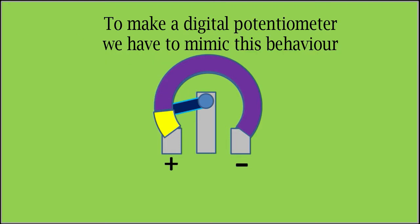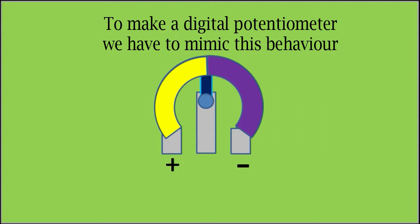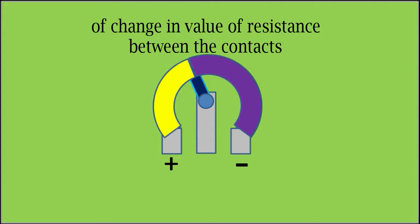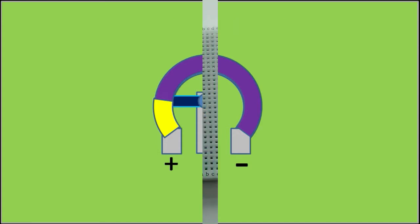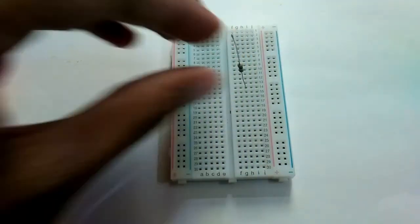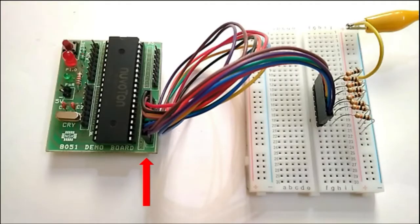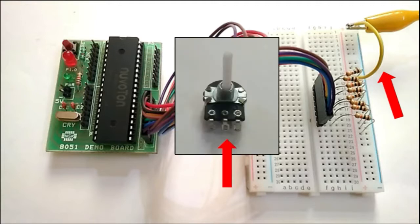To make a digital potentiometer, we have to mimic this behavior of change in the value of resistance between the contacts. To do this, I connected 8 ten-kohm resistors to one of the ports of an 8051 microcontroller and connected all the other ends of the resistors together to a common point. This common point will behave like the center pin of the potentiometer, where we will get variable voltage output.